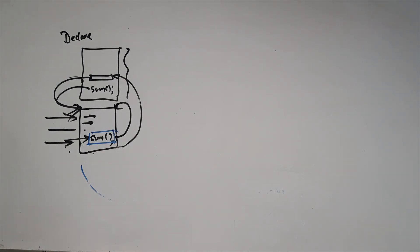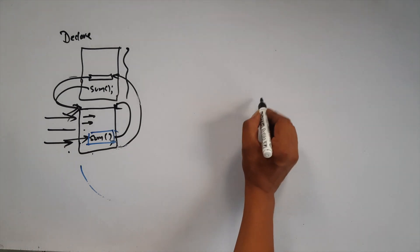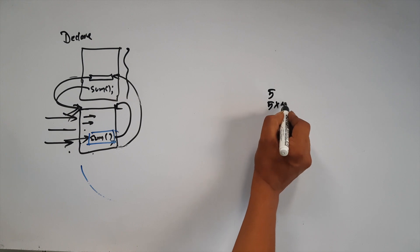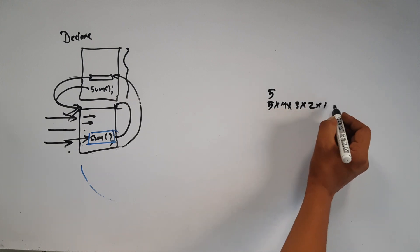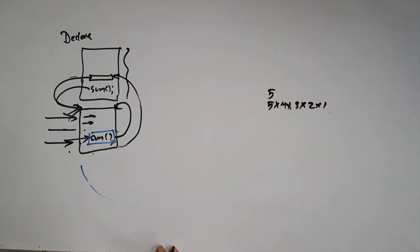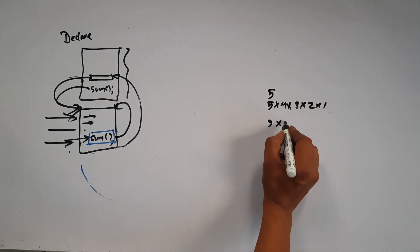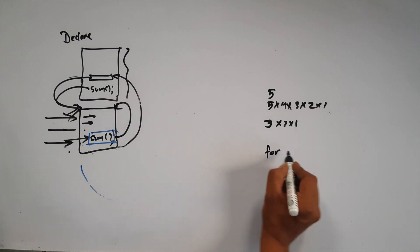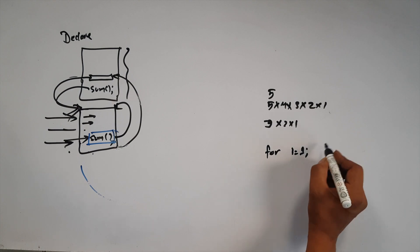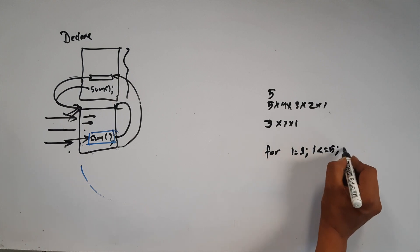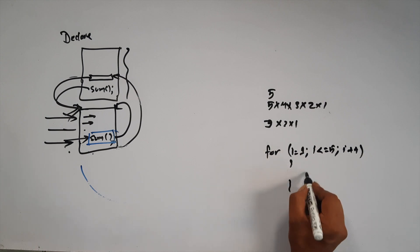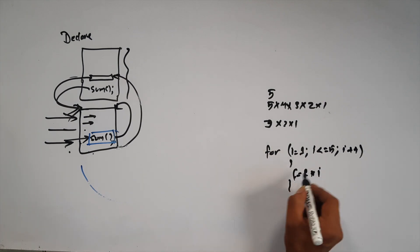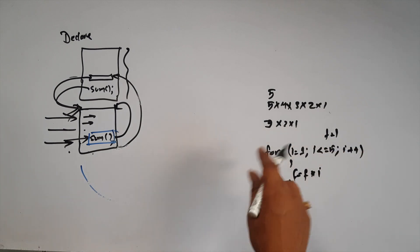Now, factorial of a given number is the product of n natural numbers. For example, factorial of 5 is 5 × 4 × 3 × 2 × 1. Without using a function, we can compute this with a loop: for i equals 1, i less than or equal to 5, i++, and f = f × i, where f is initially 1.